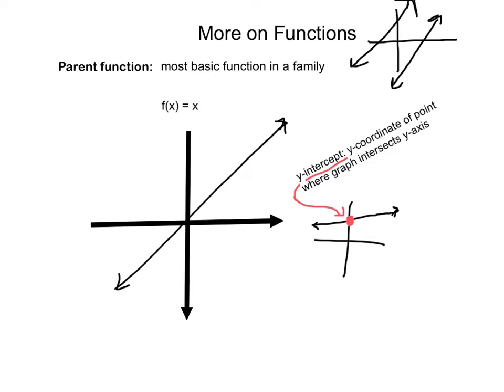So this one is a linear function. So this is the parent function of a linear function. It is the most basic function in that family. A more complex function in a family would be something like f(x) = 2x or f(x) = 2x + 1. Getting more complex each time with this as the most basic.